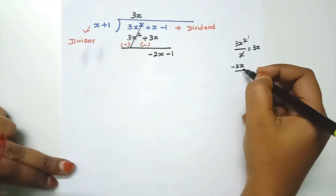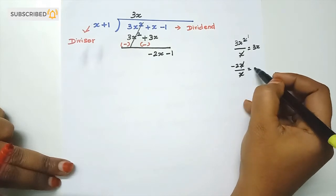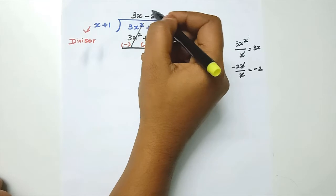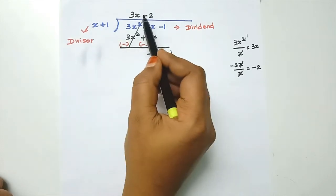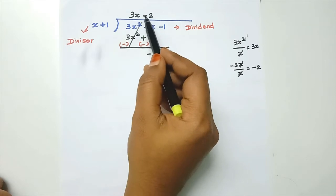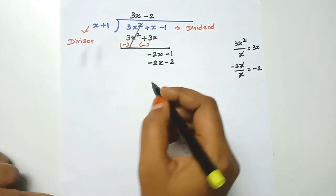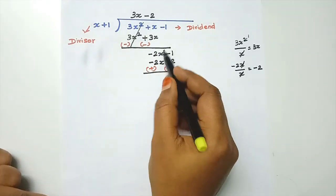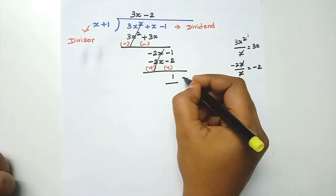We bring down and divide minus 2x by x, which equals minus 2. So the quotient's next term is minus 2. We multiply minus 2 by the divisor x plus 1 to get minus 2x minus 2. We change the sign, minus 2x cancels with minus 2x, and the balance is 1.